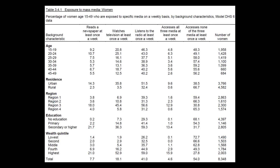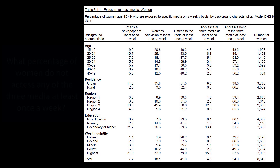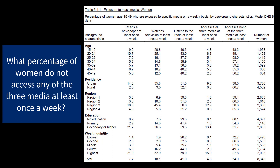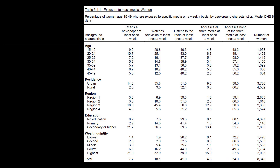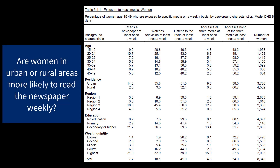Let's do some practice questions. Feel free to pause the video after each question if you feel like you need more time. What percentage of women do not access any of the three media at least once a week? It's 54.0%. Are women in urban or rural areas more likely to read the newspaper weekly? Women in urban areas — 14.3% read the newspaper weekly, compared to 2.3% of women in rural areas.